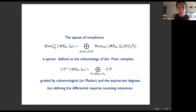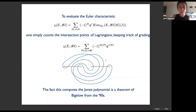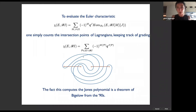However, while in Floer theory to compute homology you need to count instantons, to compute the Euler characteristic all we need to do is count the intersection points of the Lagrangians, keeping track of grading. Usually we just count intersection points keeping track of signs — the fermion number — but here we also have equivariant gradings to keep track of.